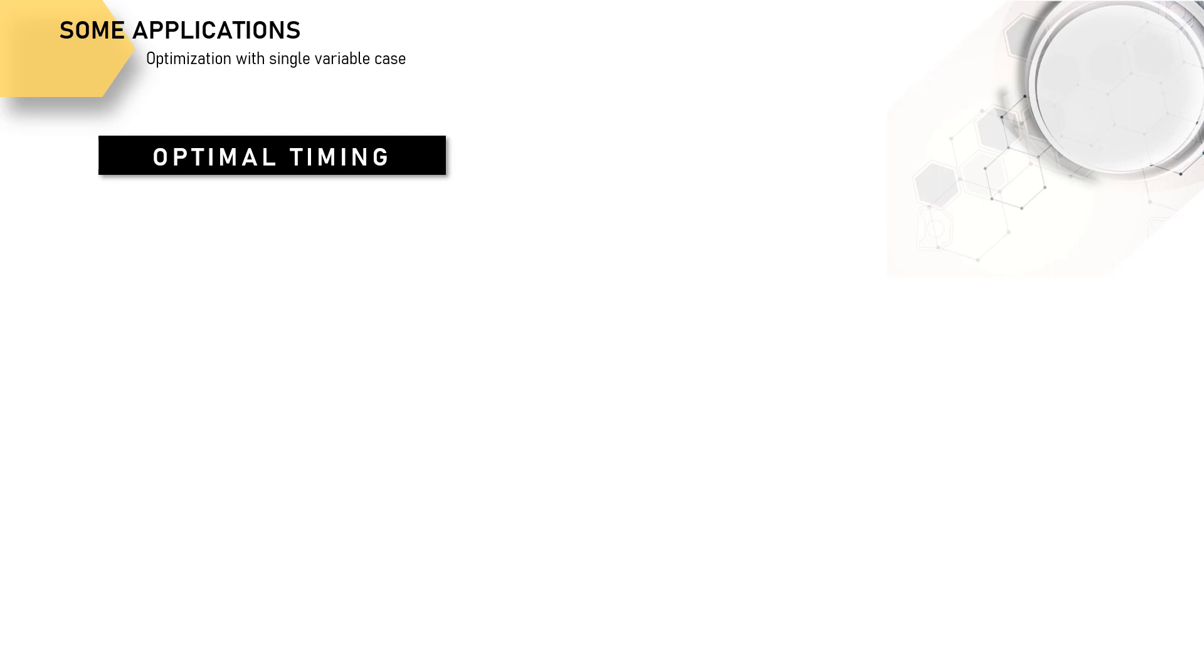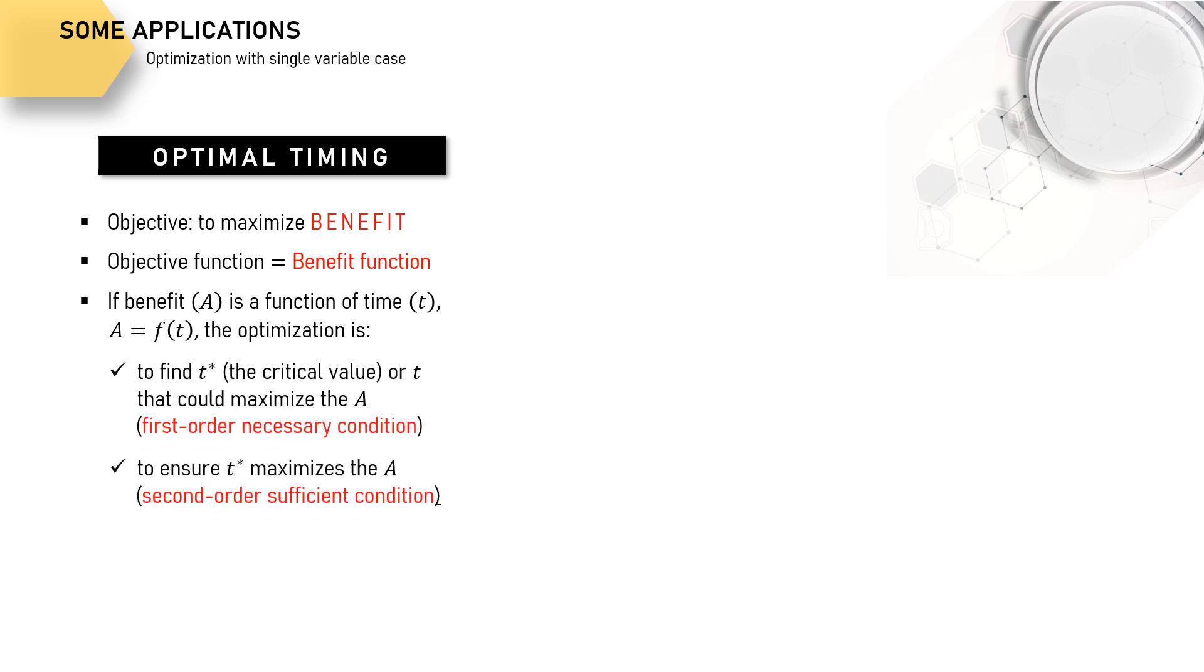First, now the objective is to maximize certain benefit. Since benefit is the objective, then benefit function is our objective function. With benefit only affected by time, in our case, optimization again will be about satisfying the first and second order condition for the single variable case optimization. Now let's take a look at the example.